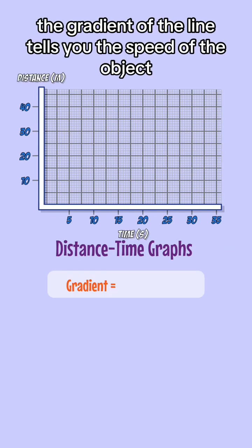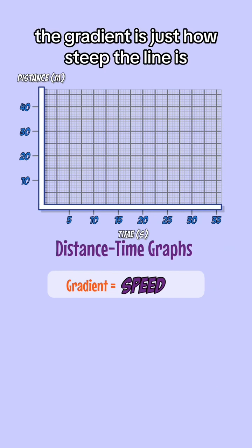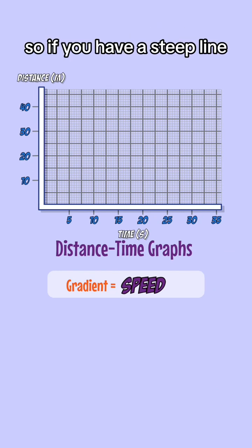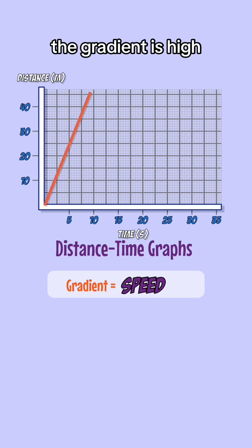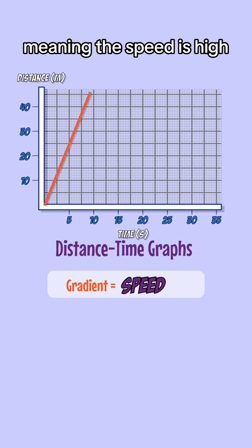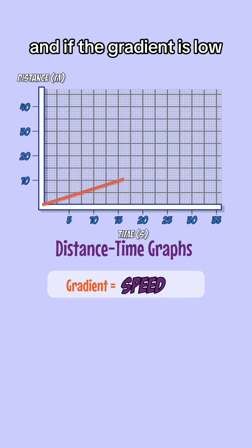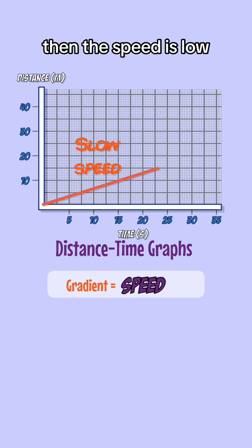The gradient of the line tells you the speed of the object. The gradient is just how steep the line is. So if you have a steep line, the gradient is high, meaning the speed is high. And if the gradient is low, then the speed is low.